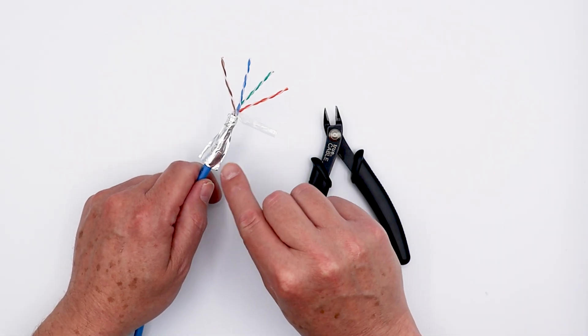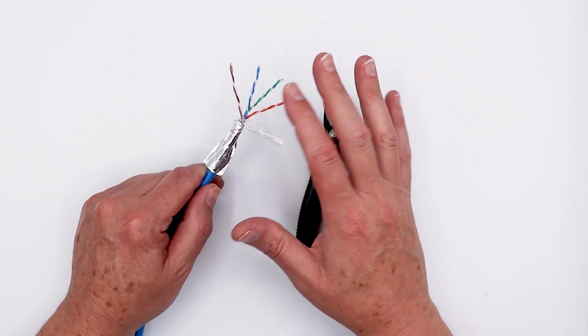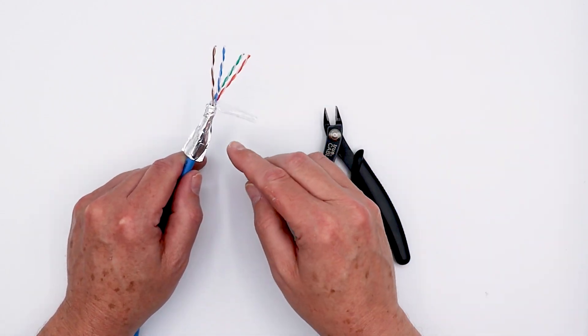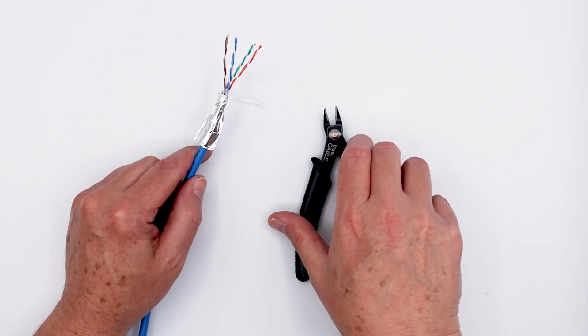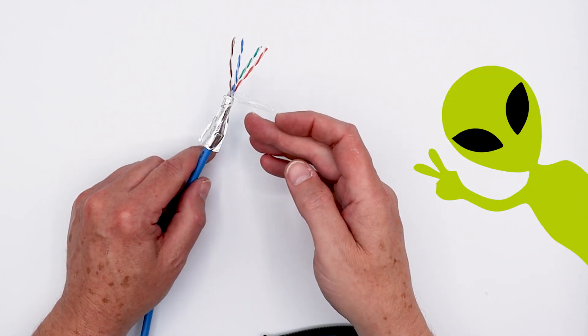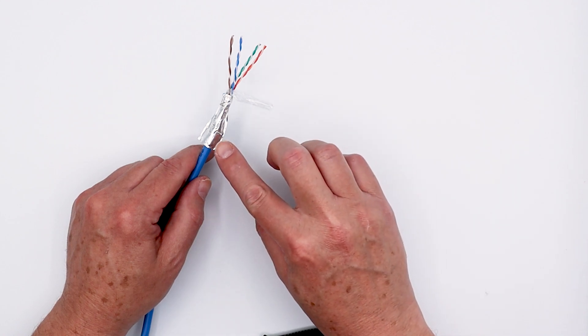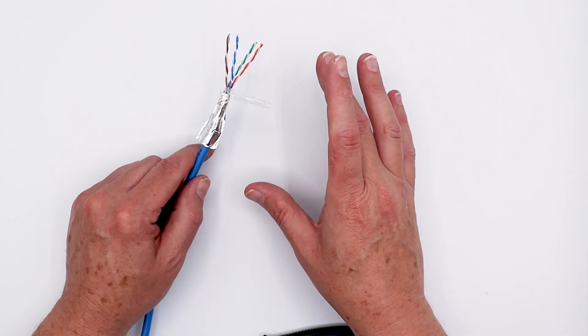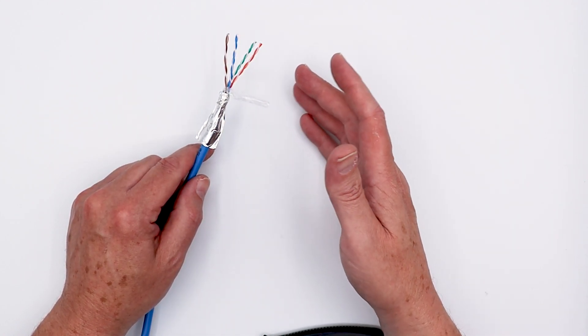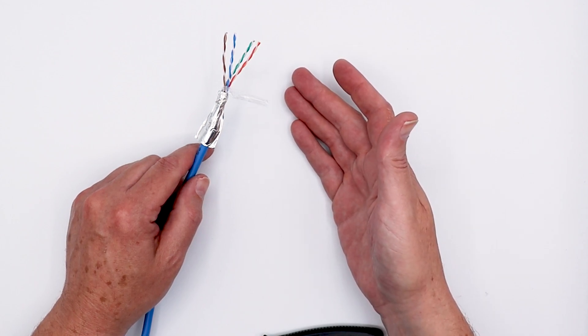What the cable shield does is it prevents the internal pairs here from being overwhelmed by what's called alien crosstalk. And that could be interference from another cable. But more likely it's going to be interference in electromagnetic fields found by maybe AC wiring inside of a wall.